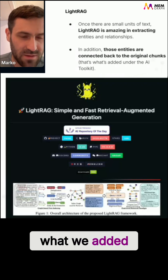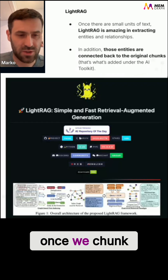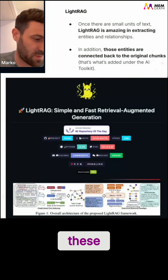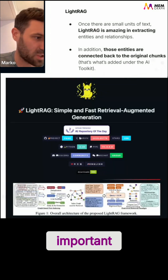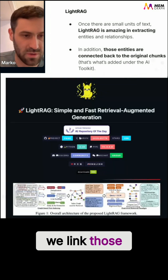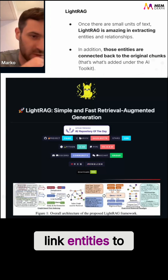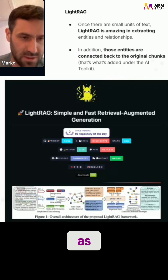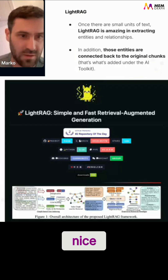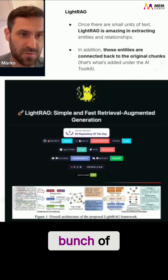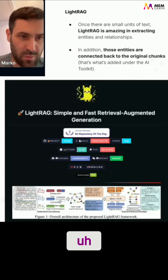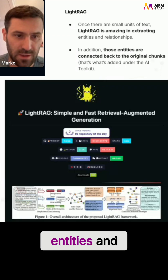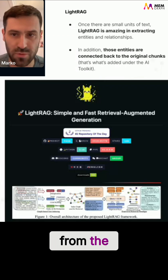What we added, in addition: once we chunk the documents, we actually link those chunks — these semantically important chunks from the document — we link those to entities, or we link entities to those chunks. You can think of it as a very nice tool that has a bunch of system prompts, prompting LLMs in many different steps to actually extract entities and relationships from the document.